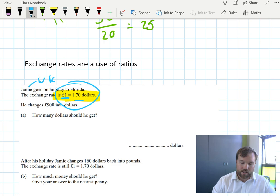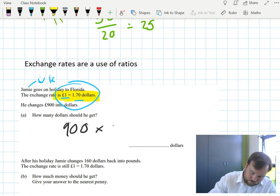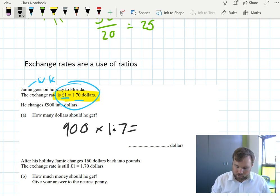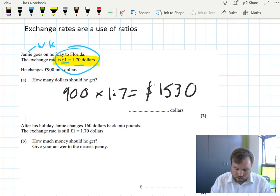Here, clearly, if you have pounds going to dollars, a pound will buy you more than 1 dollar. So if he's got 900 pounds, he should end up with more than 900 US dollars. So what he can do is do 900 multiplied by 1.7 to get his final amount. And chuck that in the calculator. 900 times 1.7 is 1530.